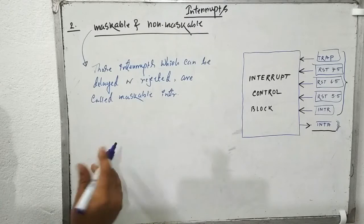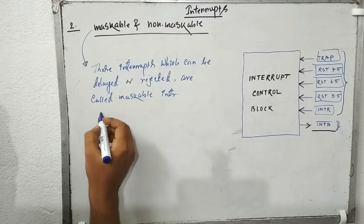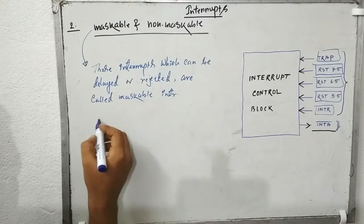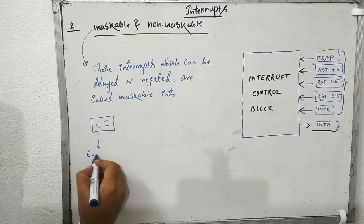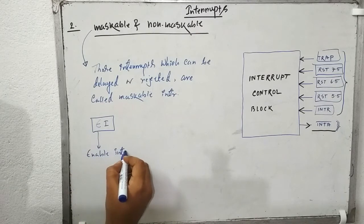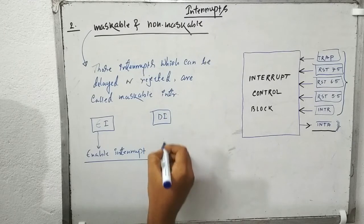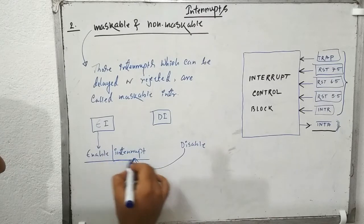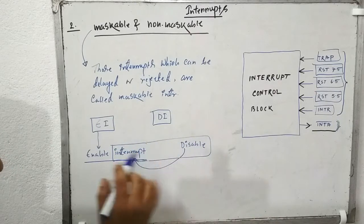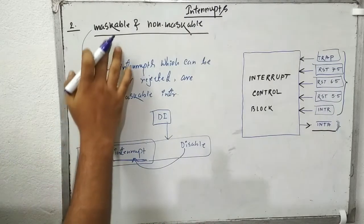That means this interrupt can be controlled by some software instruction. If we want to enable this kind of interrupt, we apply a software instruction available in the 8085 microprocessor which is Enable Interrupt (EI). If we want to disable the interrupt, there is another software instruction which is Disable Interrupt (DI). By these two software instructions — DI and EI — we can manipulate maskable interrupts.